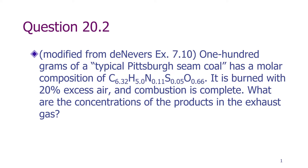In this problem, we have 100 grams of a typical Pittsburgh seam coal that has a molar composition of C6.32, H5, N0.11, S0.05, O0.66. It is burned with 20% excess air and combustion is complete. What are the concentrations of the products in the exhaust gas?